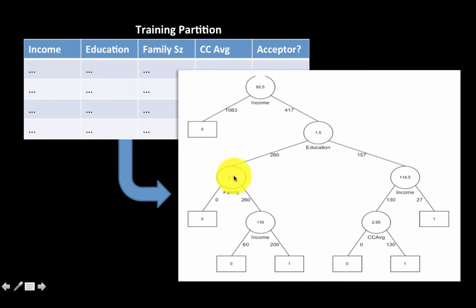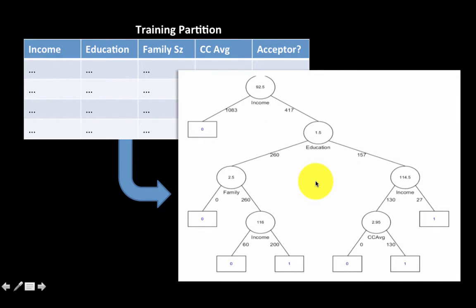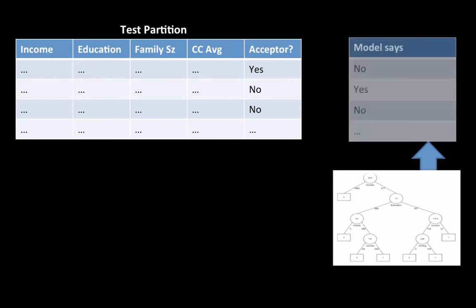How would we apply all of this in practice? We take our original data and divide it, as usual, into a training partition and a test partition. We use the training partition to build the tree — how exactly the tree is built we'll understand a little bit later, but we use a computer program such as R to figure it all out. We use the training partition to arrive at a bunch of rules, and then we can see how well the method does on the training partition itself by creating a classification confusion matrix or error matrix.